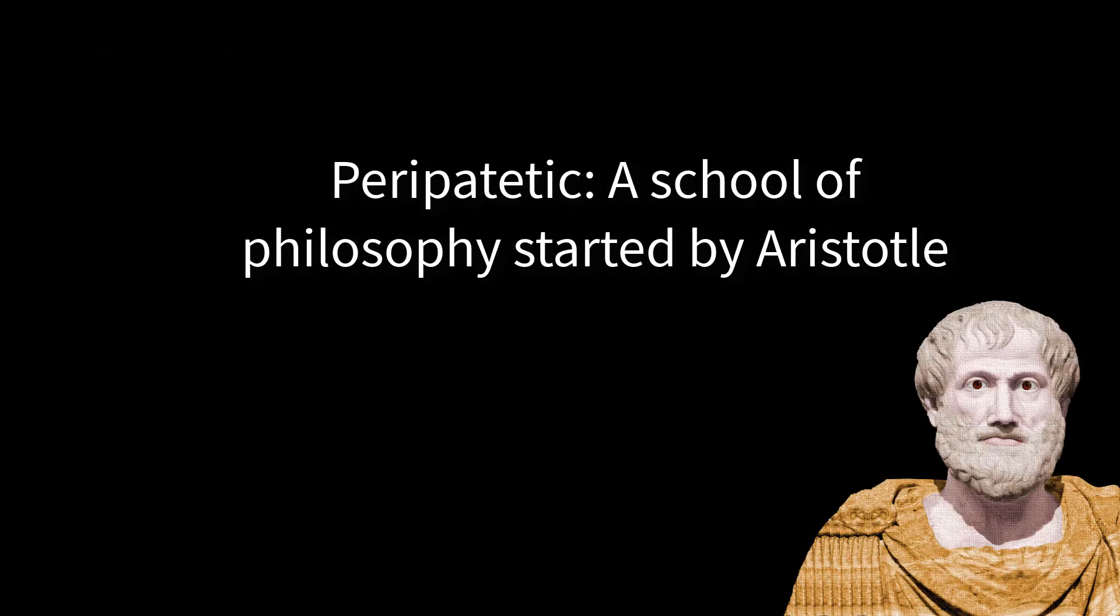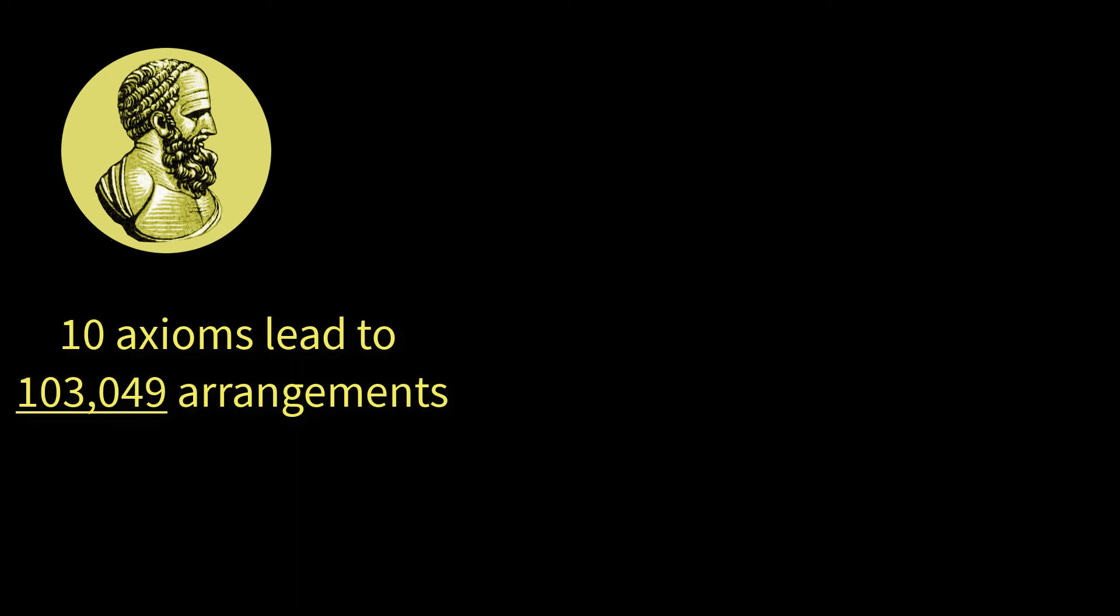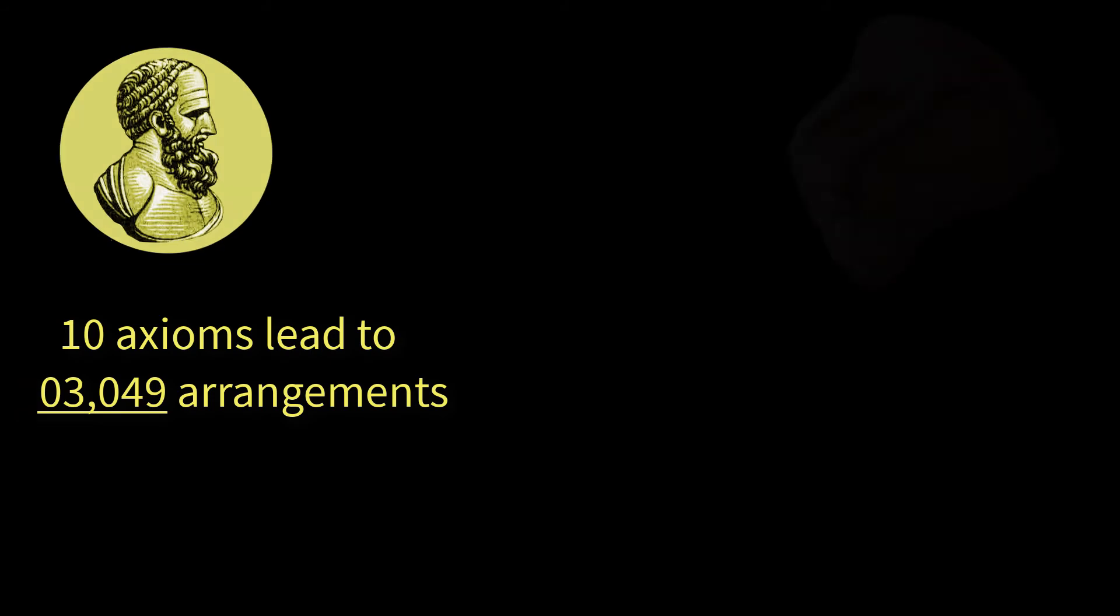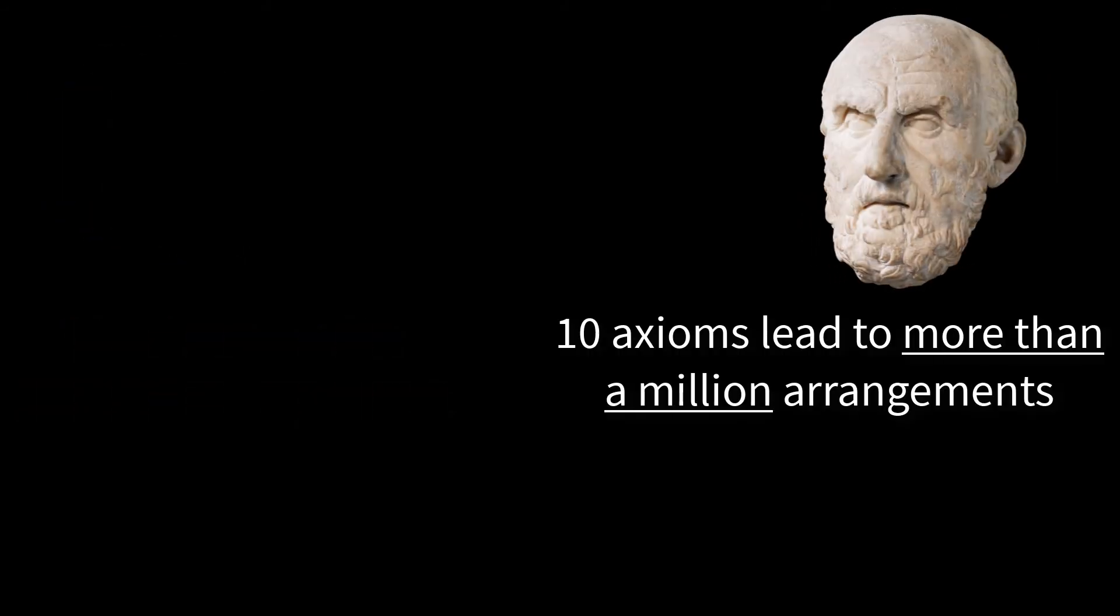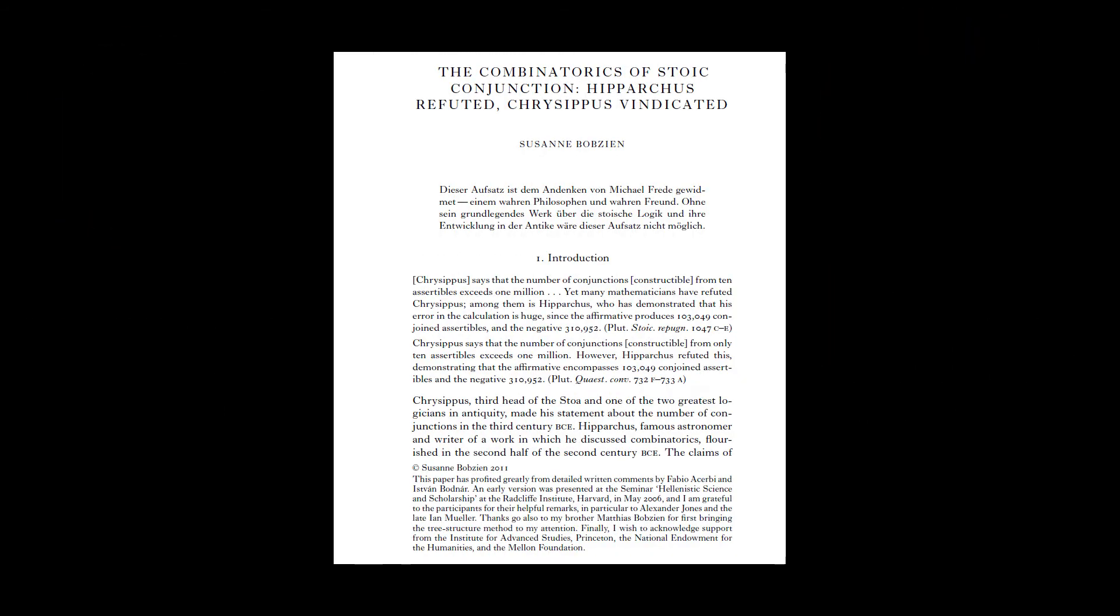The peripatetics and Stoics didn't always see eye to eye on questions of logic. Professor Bobzine believes her hypothesis explains why Hipparchus calculated that ten axioms led to 103,049 arrangements, while Chrysippus thought it was many more. One of the links below is a link to her paper.